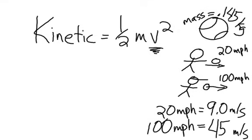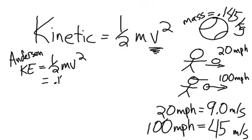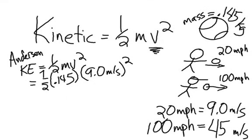A 100 mile an hour pitch then is roughly 45 meters per second. And so first let's figure out how much kinetic energy my 20 mile an hour pitch would have. We use the equation one half mv squared where m is .145 kilograms and v is 9.0 meters per second. We take that times a half and square the velocity and I get, using significant digits, 5.9 joules of energy.